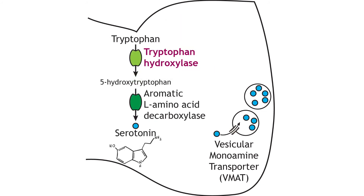Serotonin, a biogenic amine neurotransmitter, is known for its role in mood. Tryptophan is converted into 5-hydroxytryptophan by tryptophan hydroxylase. This is also the rate-limiting step of the synthesis pathway. Then, aromatic L-amino acid decarboxylase converts the 5-hydroxytryptophan into serotonin. Serotonin is packaged into vesicles by the vesicular monoamine transporter, similar to the other monoamine neurotransmitters dopamine and epinephrine.